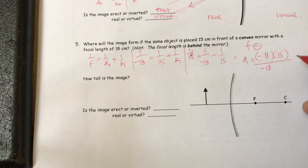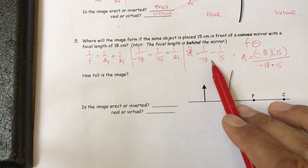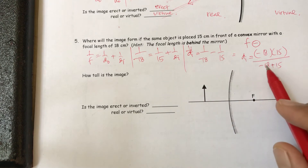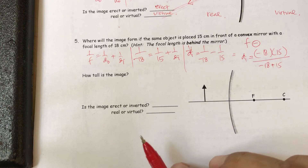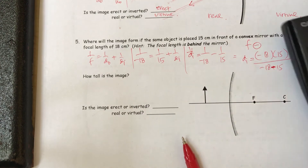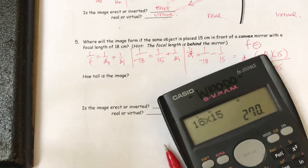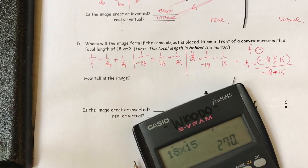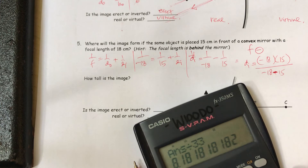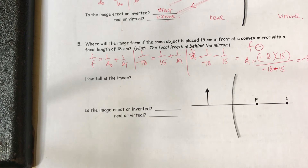We get d-i equals negative 18 times 15 divided by negative 18 minus 15, giving 270 divided by 33, so d-i is approximately negative 8.18 centimeters.